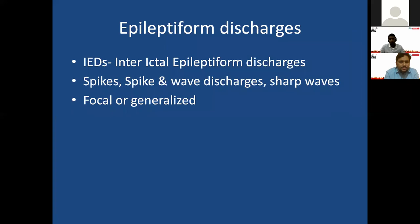When it comes to epileptiform discharges, we commonly call them IEDs — interictal epileptic form discharges. What happens during a seizure is different from what happens between seizures. If someone had a seizure and we record an EEG hours or days later when they are not having a seizure, people with epilepsy can still produce interictal epileptic form discharges. That is the whole purpose of doing EEG when a patient is not actively seizing.